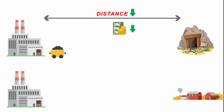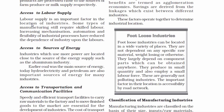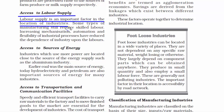Similarly, if agro processing and dairy industries are closer to the farm, the products would not get damaged. The third factor is access to labor supply. Industries need labor or workers. Even if there is automation or robots, you still need workers. So labor supply or human resources is very important for an industry.